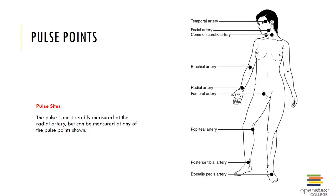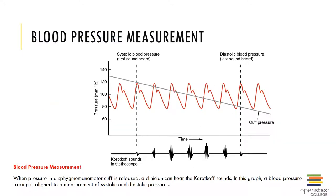The pulse points of the body are shown here and you should be able to identify the various pulse points. The pulse is most readily measured at the radial artery. Another typical pulse point commonly palpated is the brachial artery and the common carotid artery. Blood pressure measurement is performed using a sphygmomanometer and a stethoscope. When measuring blood pressure, you can hear the Korotkoff sounds; the first heart sound heard is systolic blood pressure and the last heart sound heard is diastolic blood pressure.